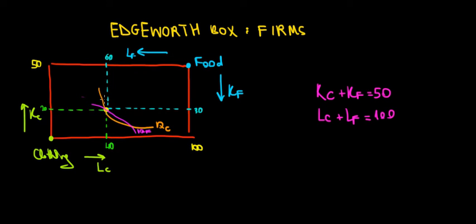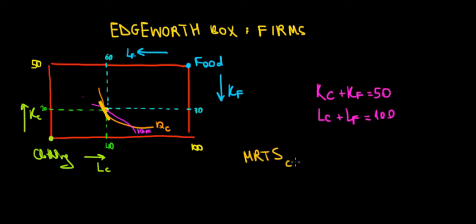For instance, if we look at the slope at the yellow point on the ISO quant of clothing — on the orange curve — if we draw the slope there, it's going to be rather steep, pretty vertical. So it's going to be a pretty high MRTS. Let's assume it's going to be equal to 4.